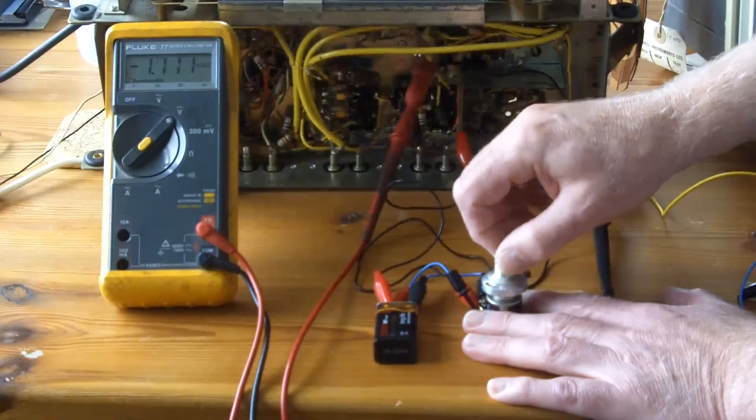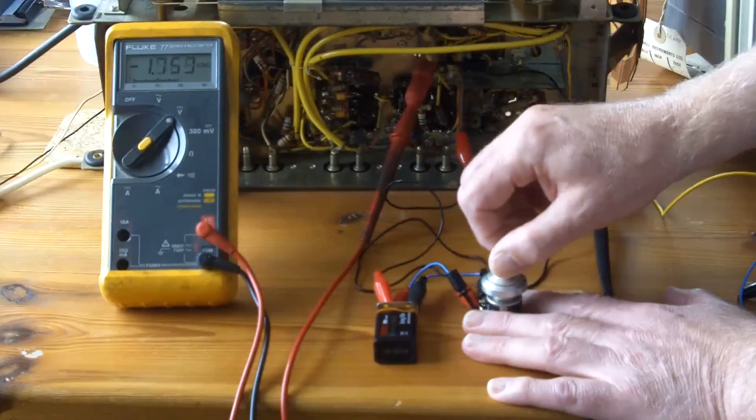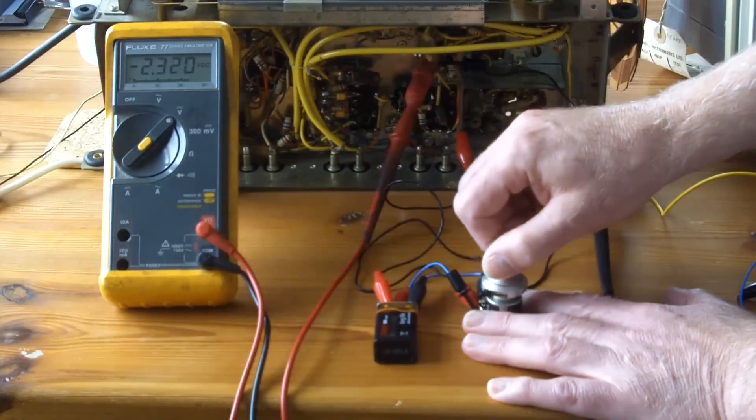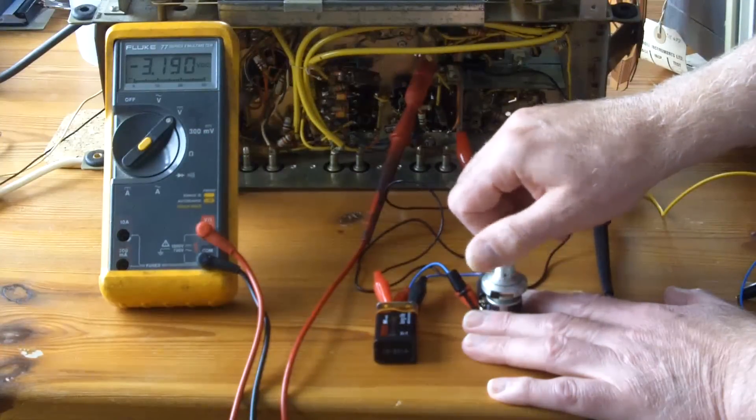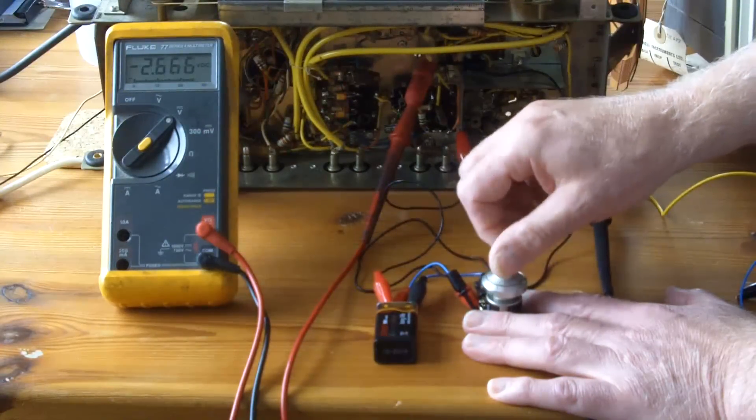The digital meter is connected with the negative lead to ground and its positive lead to pin 7 of the mixer valve. And of course you'll see it's reading negative volts.